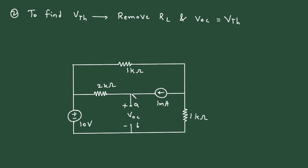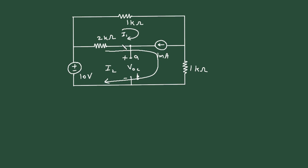To find the value of VOC, we can apply mesh analysis. Let's say this is mesh number 1 with current I1, and this is mesh number 2 with current I2. Now we will apply KVL to mesh number 1. We can see between mesh number 1 and mesh number 2 there is a current source, so this forms a super mesh. We will apply KVL to the super mesh.